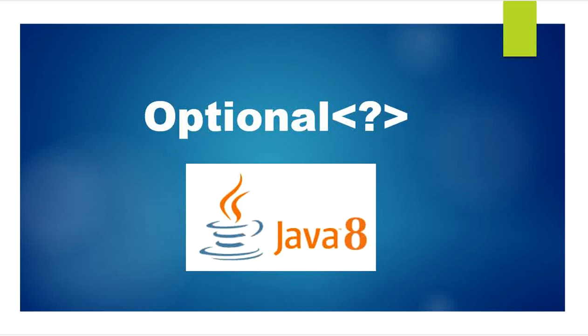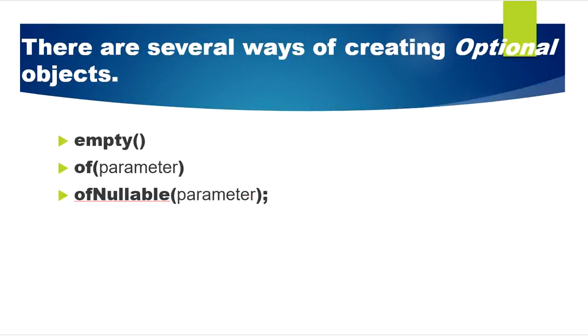Welcome to this channel. Today we will discuss Java 8 Optional class use cases and how we can use the Optional class to avoid NullPointerException. Optional is a public final class used to deal with NullPointerException in Java applications, introduced in Java 8. There are three ways to create an Optional object: using the empty() method, the of() method, and ofNullable() — all of which are static methods in the Optional class.